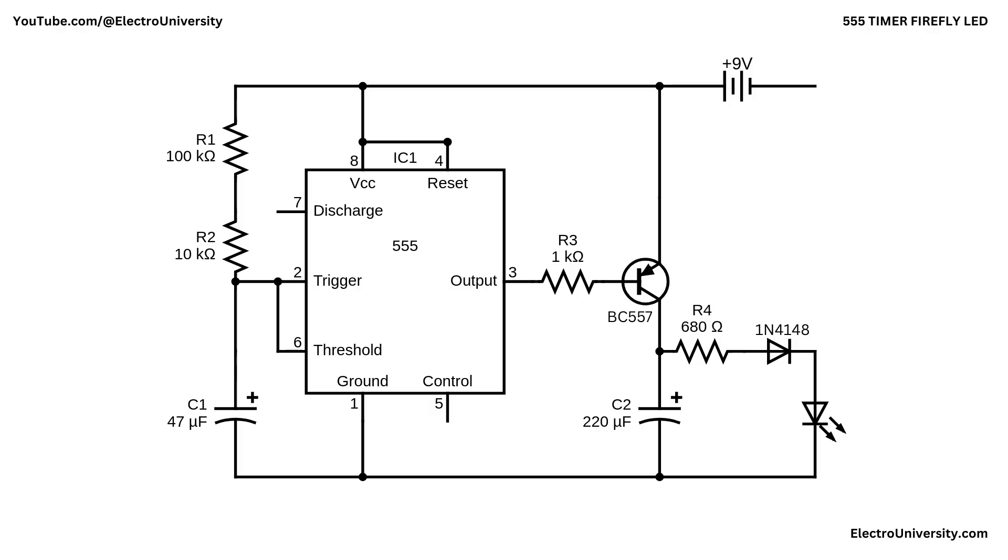Let's dive into the circuit and break it down step by step. This circuit is a Firefly LED flasher. Instead of a harsh on and off blink, it gives a short bright pulse followed by a smooth fade like a Firefly's glow. The 555 is wired as an astable oscillator.